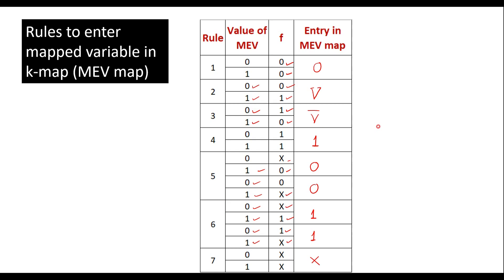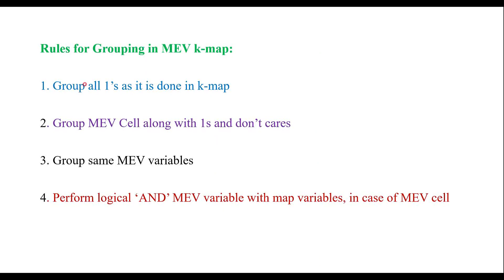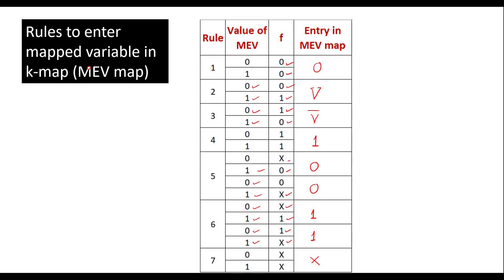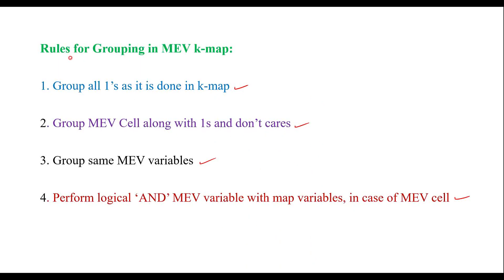At this point the viewer may not fully understand these rules, but with an example it will become clear. Now let's see how to do the grouping, or what rules to follow, for grouping in MEV cells. Rules for grouping in MEV KMAP: first, group all ones as done in normal KMAP. Next, group MEV cells along with ones and don't cares. Group same MEV variables, and perform a logical AND operation between the MEV variable and the map variable in the case of an MEV cell.